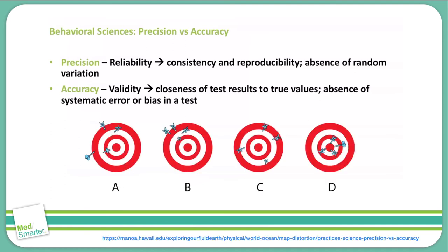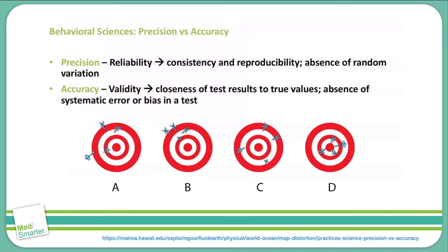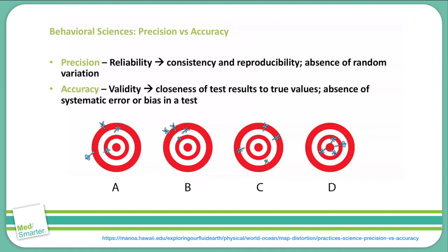Let's look at these bullseyes. If you throw darts in pattern A, none are close to the bullseye and none are close to each other — there is neither accuracy nor precision. In B, you're not hitting close to the bullseye, but you are hitting close together — there is precision but not accuracy. In C, the darts are all equal distance around the bullseye — there is some accuracy in hitting the same distance from the bullseye, but it's not precise. In D, all the darts land close to the bullseye and close together — D shows the best results because they are both precise and accurate.